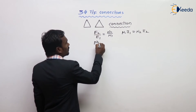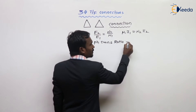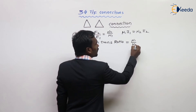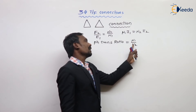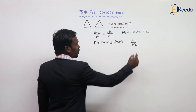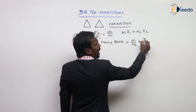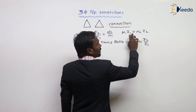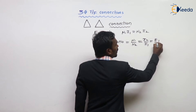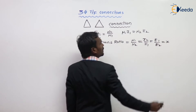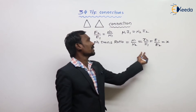The phase turns ratio is nothing but N1 upon N2 — number of turns per phase for primary to number of turns per phase for secondary. So N1/N2 equals I2/I1, and N1/N2 equals E1/E2. For example, that is equal to X. So phase turns ratio equals X. This is the phase turns ratio.